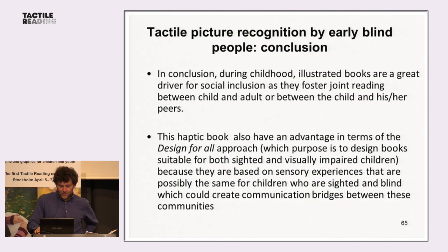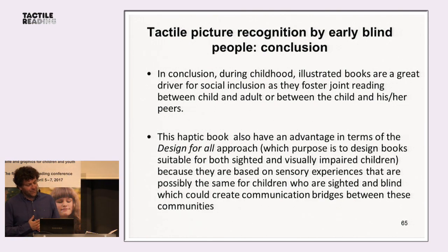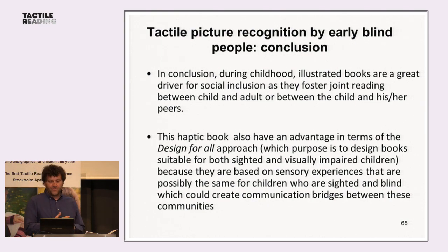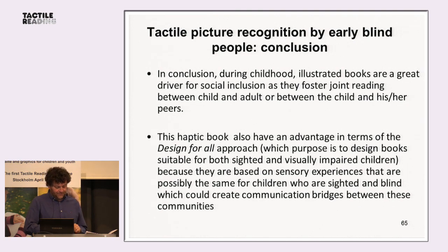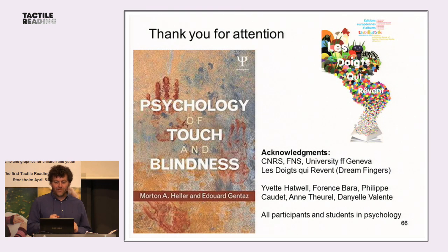In conclusion, illustrated haptic books are a great driver for social inclusion as they foster joint reading between child and adult or between a child and parents. These haptic books also have an advantage in terms of a design-for-all approach because they are based on sensory experiences that are possibly the same for both sighted and blind children, which could create communication between these two communities. Thank you for your attention.